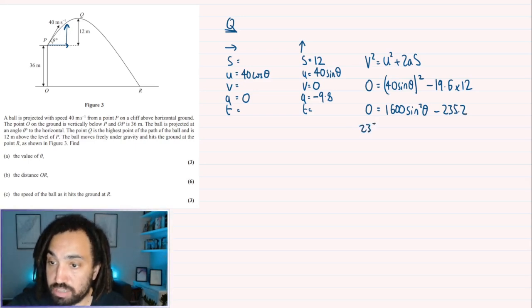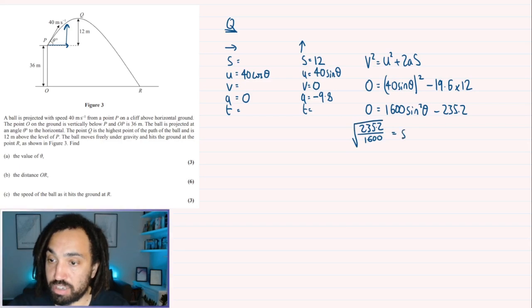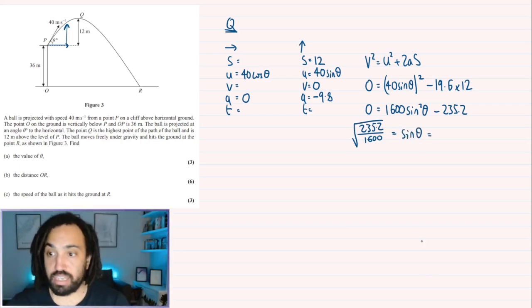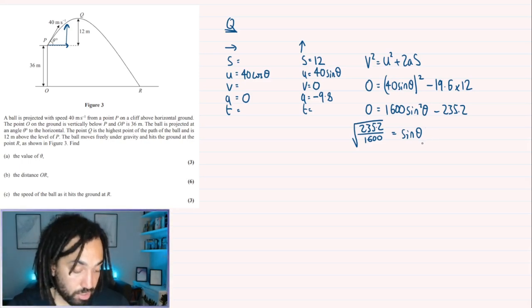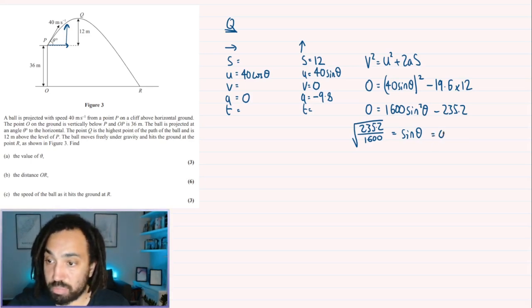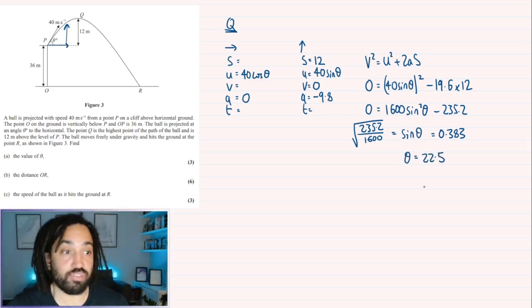Okay, so I can expand out these brackets to get 1600 sine squared theta. And this value, I'll just check, is minus 235.2. All right, so we can move that over to the other side and divide it by 1600 and also square root it and that will give me sine theta. Okay, that's good. So sine theta is equal to, well I put that into my calculator.